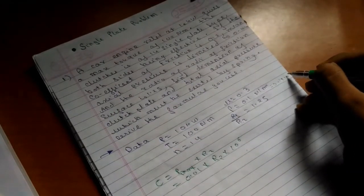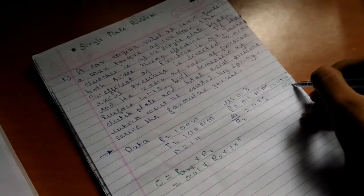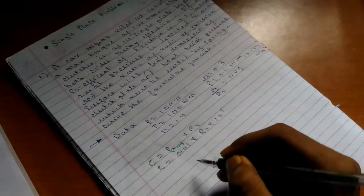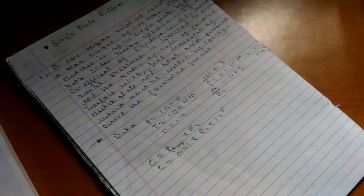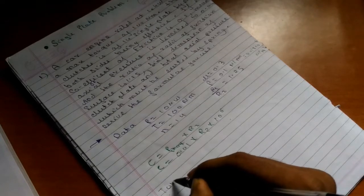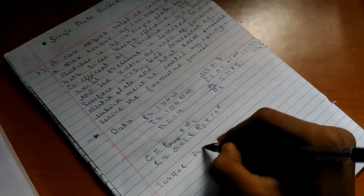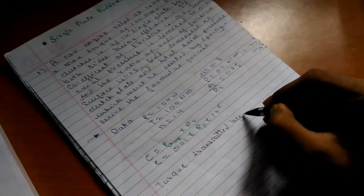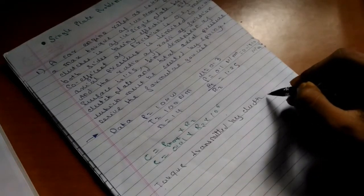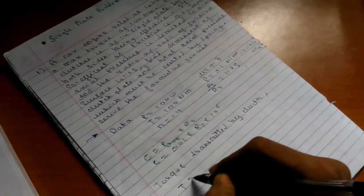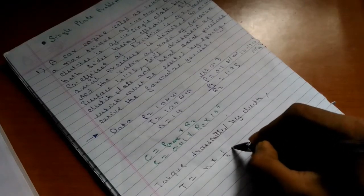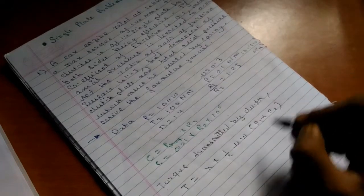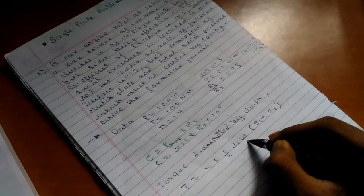We get the value of C. Now, torque transmitted by clutch can be written as T = n × μW/2 × (r1 + r2) for single plate clutch.